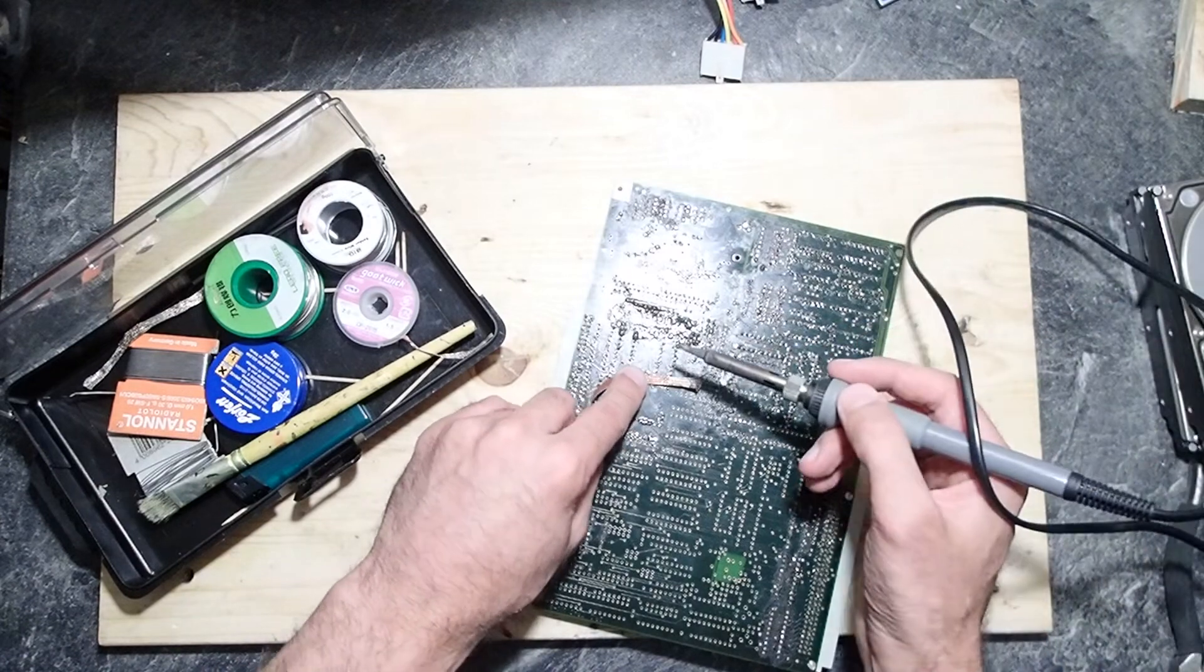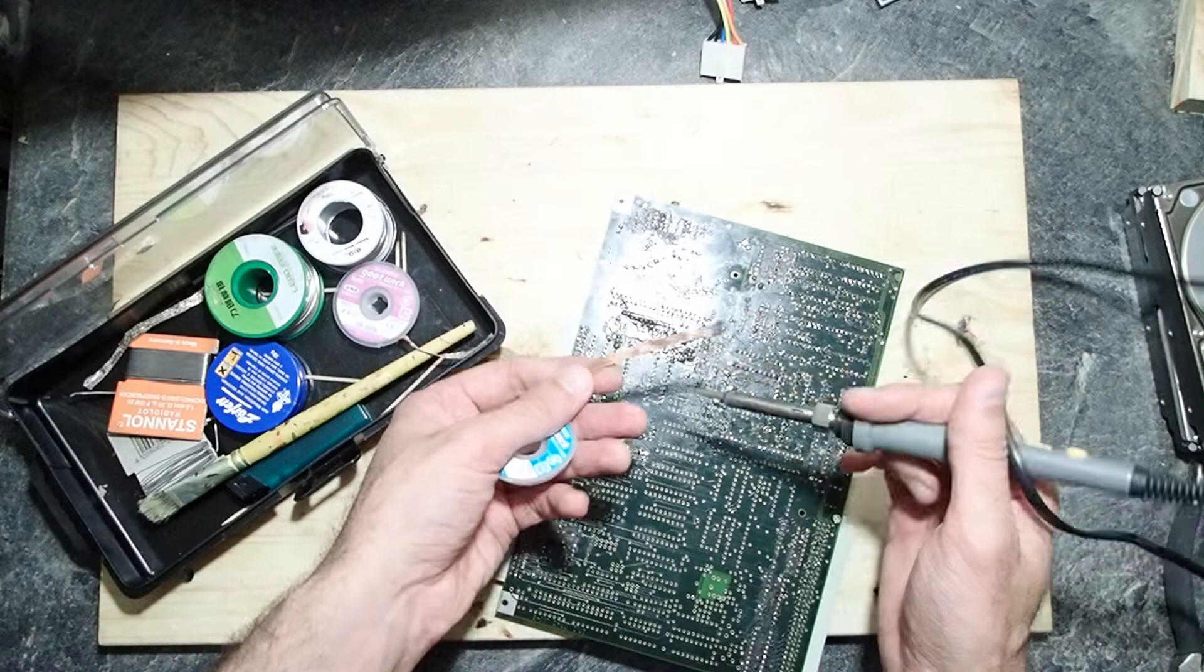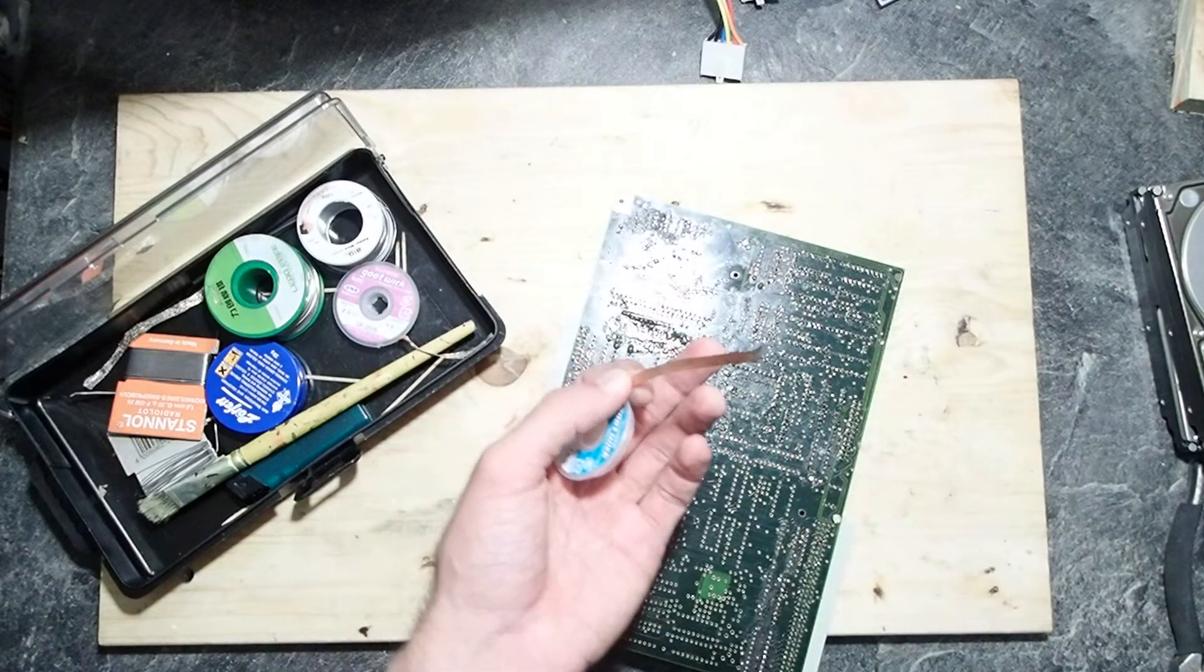You just put it on top of the contacts and then you take the soldering iron and heat up the wick and it soaks all the solder from the board.